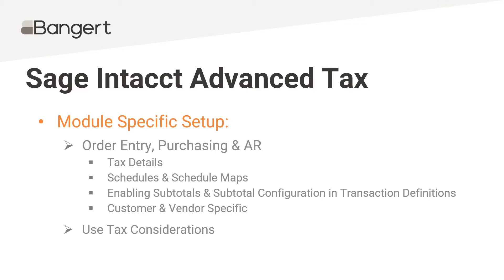The screens will look the same, but you're going to need separate lists for the order entry side and the purchasing side. Then we're going to go back into the transaction definitions you have in your system for order entry and purchasing. A common one on the construction side is the project contracts transaction definition — in there, we're going to want to enable subtotals and configure that subtotal so tax lines pre-fill in the subtotal section.